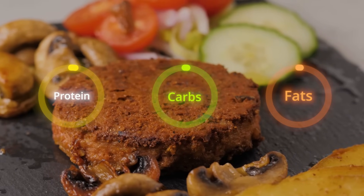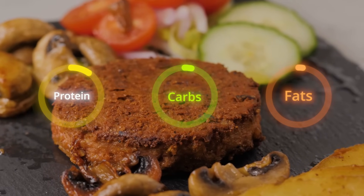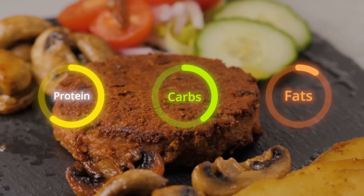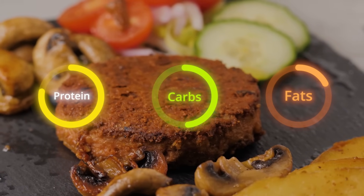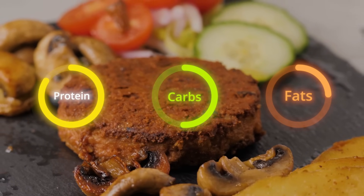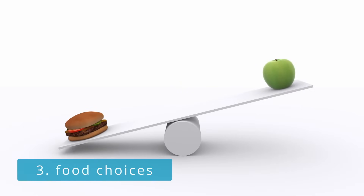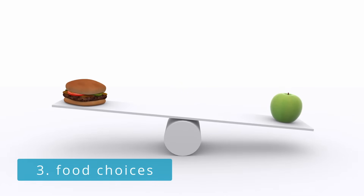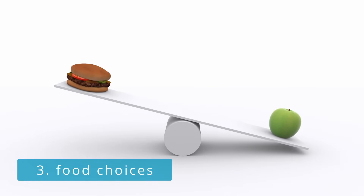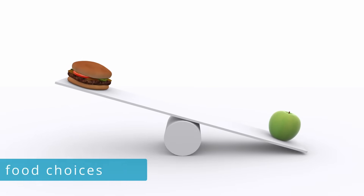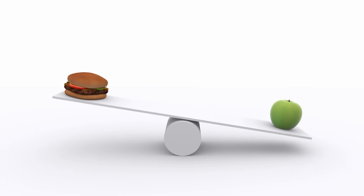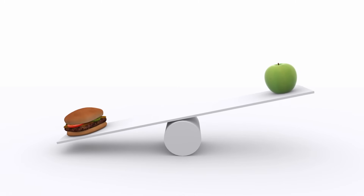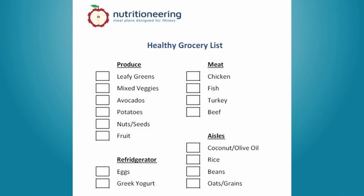All metabolic types benefit from a relatively high protein diet. That means getting enough protein to maintain or build muscle. When hitting your macros, it's necessary to choose the right foods. For optimal results, I recommend primarily whole or minimally processed options.